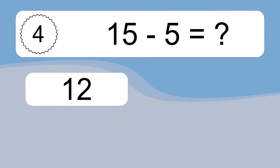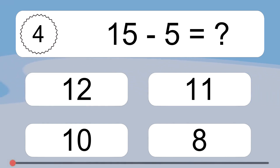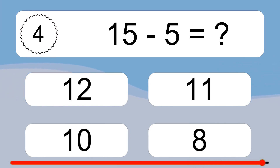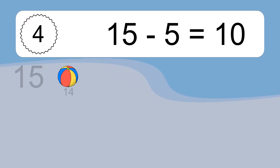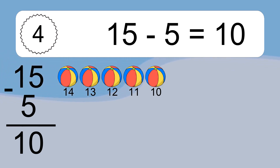15 minus 5 equals what? 15 minus 5 equals 10. Let's count it: 14, 13, 12, 11, 10.